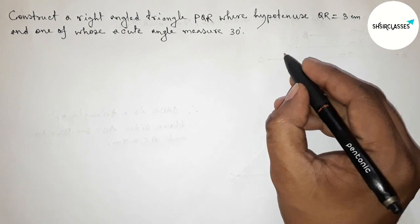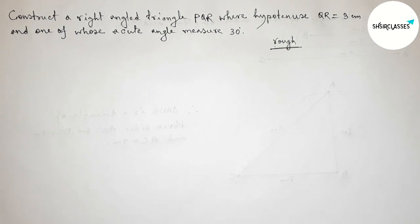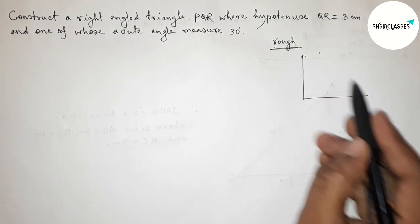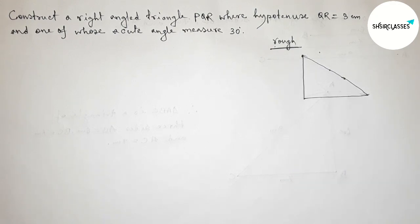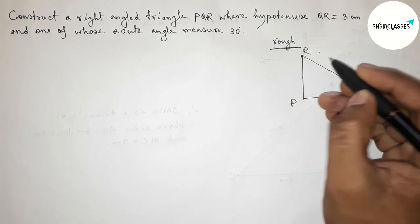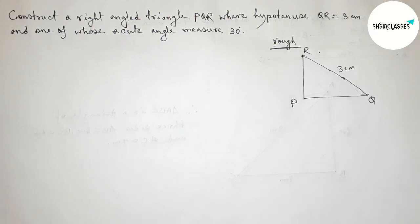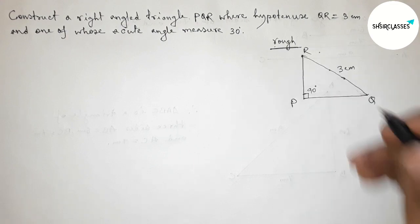First, roughly discussing some important calculations. Drawing a rough right angle triangle — here the hypotenuse QR equals 3 centimeters, taking point P, Q, and R. QR equals 3 centimeters. We know that the angle opposite to the hypotenuse of a right angle triangle is always 90 degrees, so angle P equals 90 degrees.